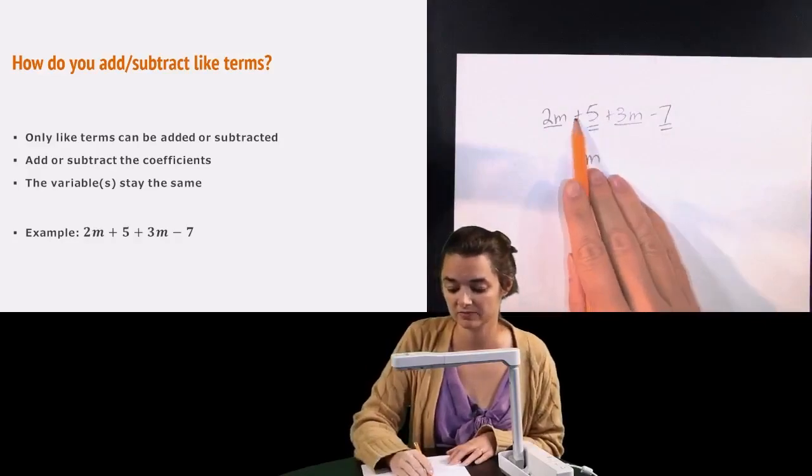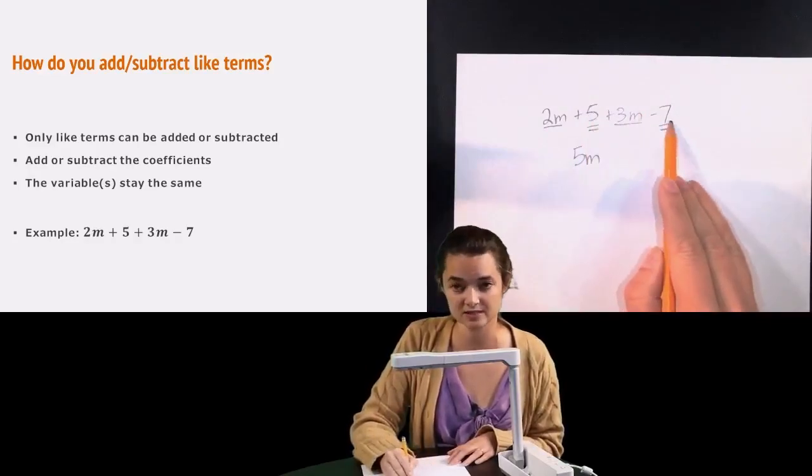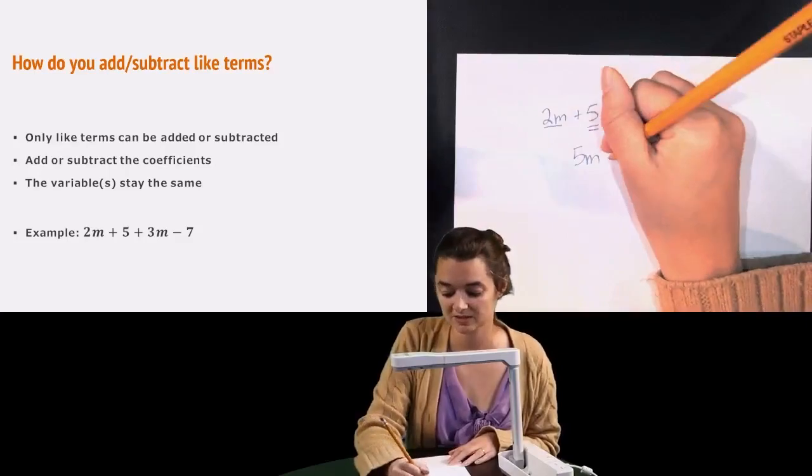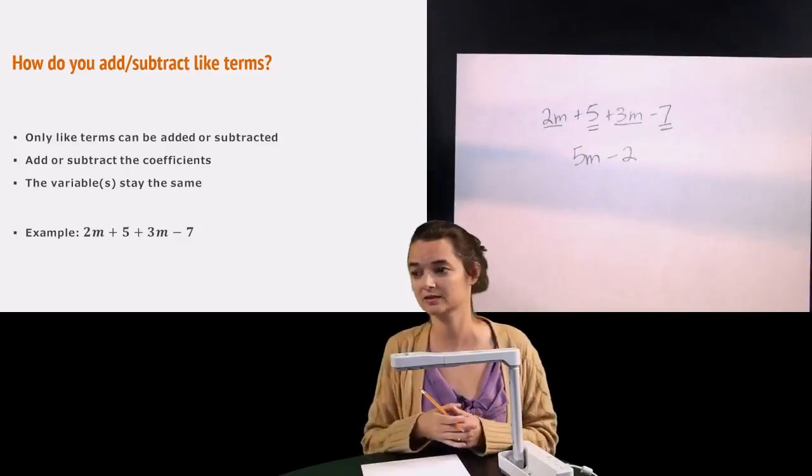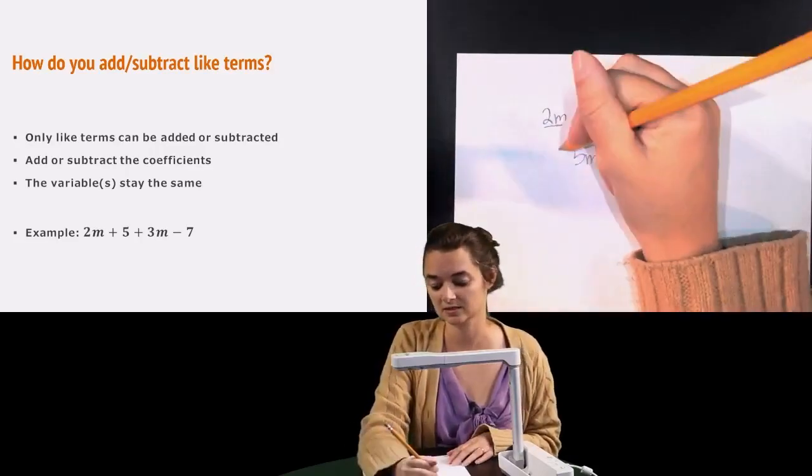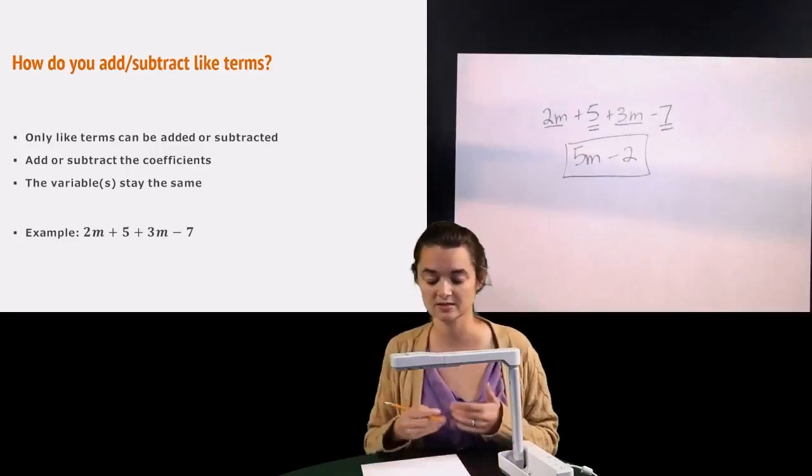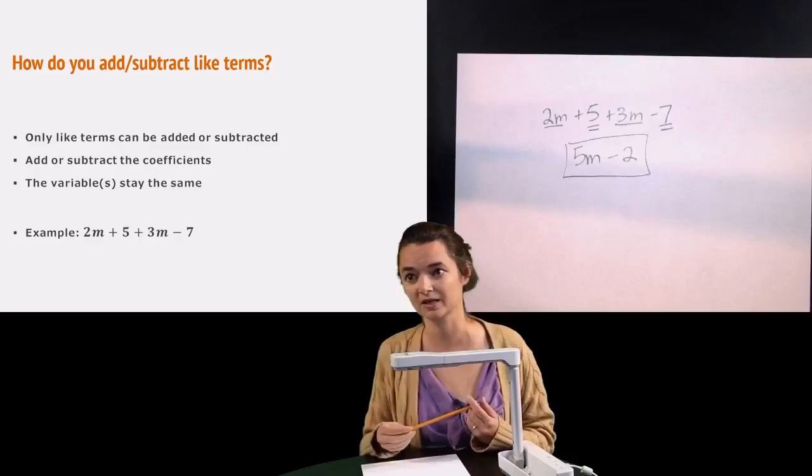With the constants, we have a positive 5 and a negative 7. And 5 minus 7 is negative 2. And it didn't add a variable or anything like that. It stayed a constant. So that's how that would simplify is to 5m minus 2.